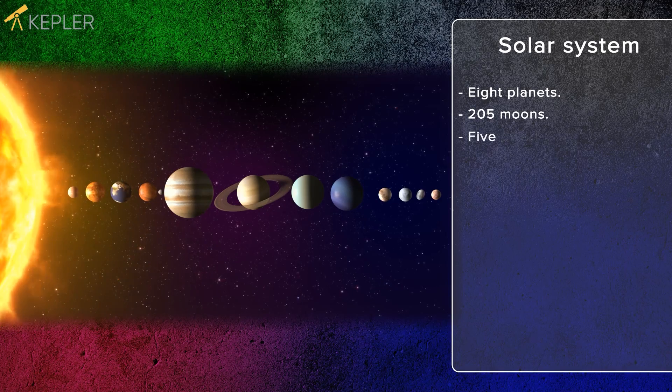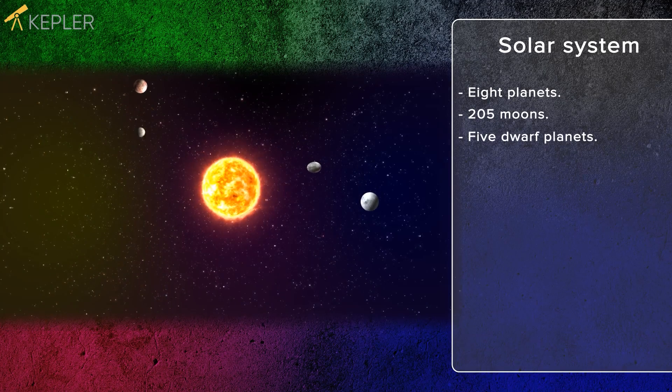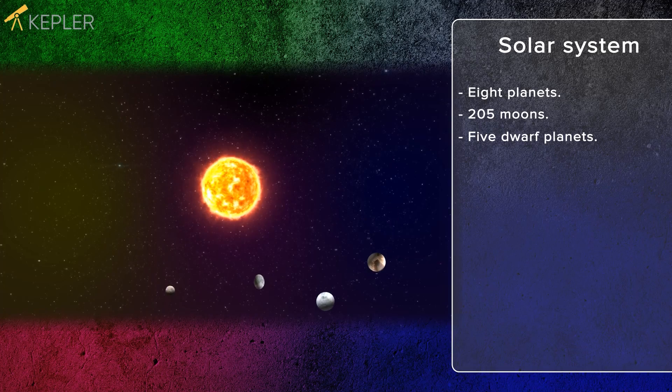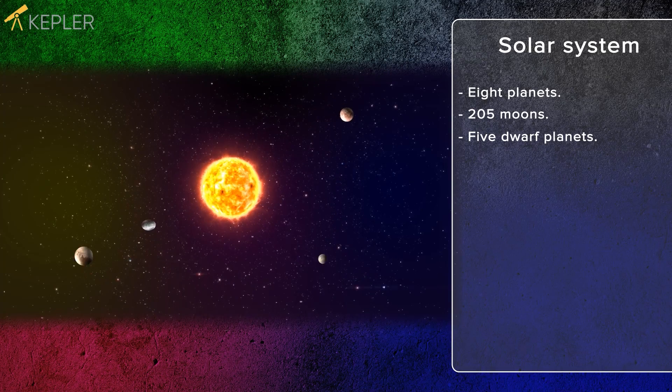In our solar system there are also dwarf planets. A dwarf planet is smaller than a normal planet but it follows an orbit around the sun.